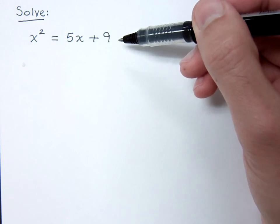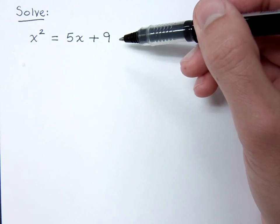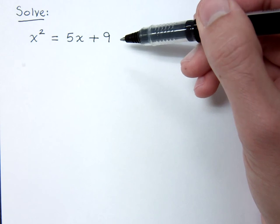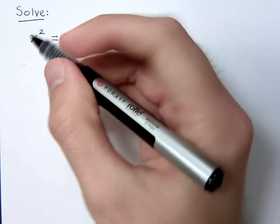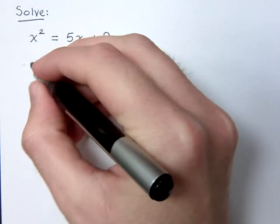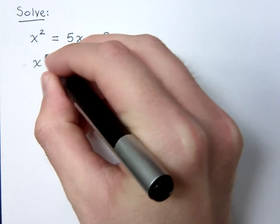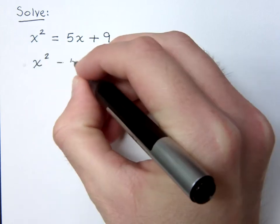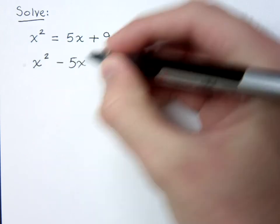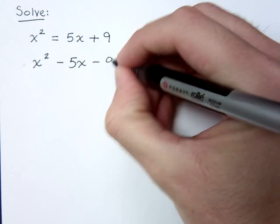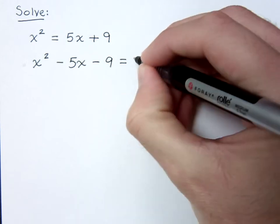Now, if we're going to use the quadratic formula, we have to make sure that we have every term on one side and 0 on the other side of the equation. So we're just going to rewrite this. x squared minus 5x minus 9 is equal to 0.